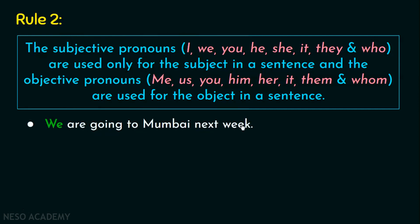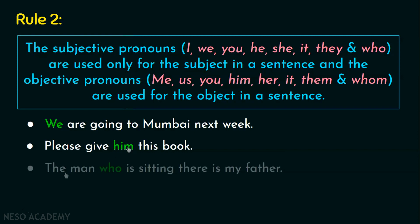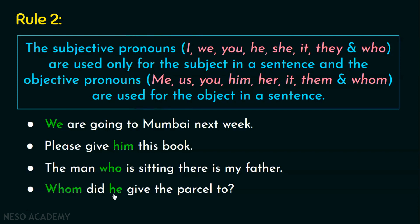For example, 'We are going to Mumbai next week' — 'are going' is the verb referring to 'we,' so 'we' is the subject and we've used the subjective pronoun 'we.' In 'Please give him this book,' the subject is implied as 'you,' so the other part is the object and we've used the objective pronoun 'him.' In 'The man who is sitting there is my father,' 'is sitting' refers to 'the man,' making the man the subject, and 'who' is the subjective pronoun for the man. In 'Whom did he give the parcel to?' 'he' is the subject, so 'whom' is the objective pronoun used for the object.